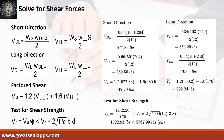At short direction: shear force from dead load is 577.83 pounds, shear force from live load is 280.5 pounds, for a maximum shear force of 1,142.2 pounds. At long direction: shear force from dead load is 350.2 pounds, shear force from live load is 170 pounds, for a maximum shear force of 692.24 pounds. The nominal shear force is 1,522.93 pounds, less than 5,767.99 pounds.